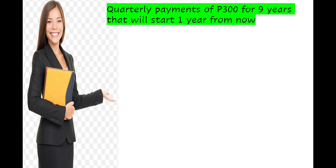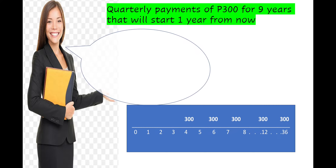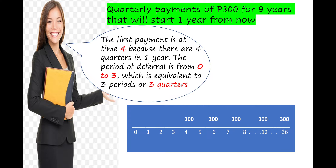Another example: quarterly payment of ₱300,000 for 9 years that will start 1 year from now. Since that is quarterly — 4 times a year — for 9 years, we have 36 periods of payment. The first payment is at time 4, which is ₱300,000, because there are 4 quarters in 1 year. The period of deferral is from 0 to 3, equivalent to 3 periods or 3 quarters. We can also find this by subtracting 1 from 4, giving 3 periods or 3 quarters.